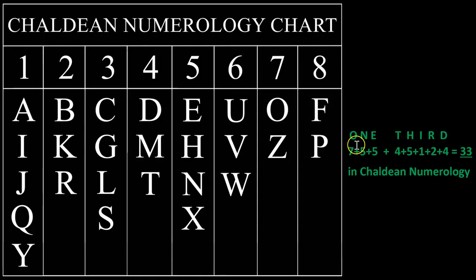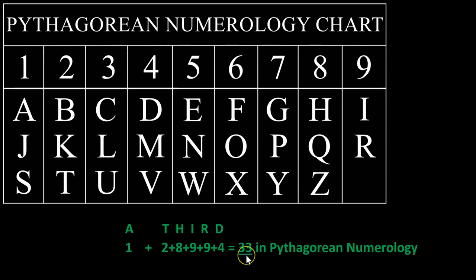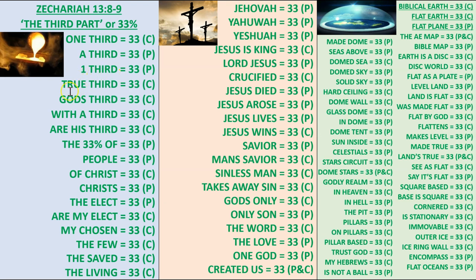For instance, the phrase 'one-third' equals 33 when translated using Chaldean numerology. Other phrases including: one-third, true third, God's third, with a third, are his third, the 33% of, people, of Christ, Christ's, the elect, are my elect, my chosen, the few, the saved, the living — all equal 33 with either Pythagorean numerology (denoted with a P) or Chaldean numerology (denoted with a C).